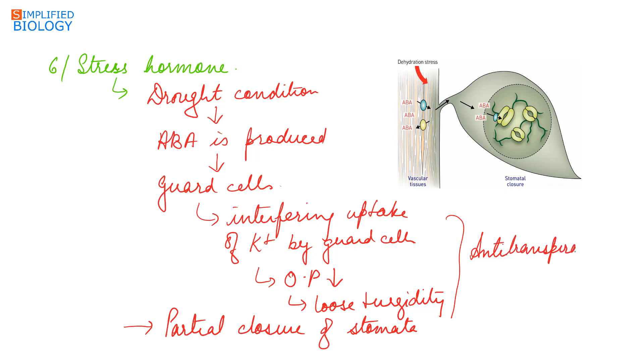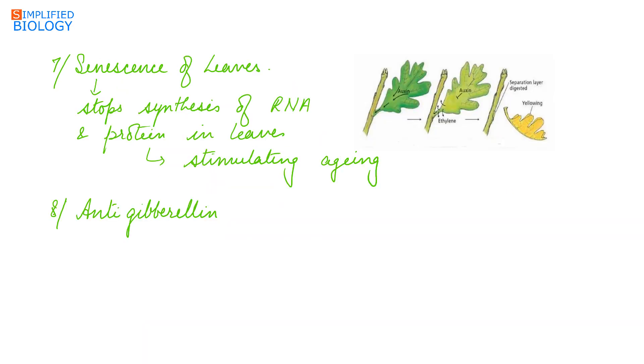Next, it causes senescence of leaves. Senescence means aging. It causes senescence of leaves by stopping the synthesis of RNA and protein in the leaves, hence stimulating aging. Due to decrease in the synthesis of RNA and protein, first yellowing of leaves occur and then they fall off from the plant.